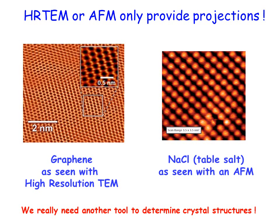We can also observe atomic resolution for graphene using high-resolution transmission electron microscopy, and for sodium chloride salt using atomic force microscopy. In each case we have a 2D projection. For graphene, which is itself a two-dimensional system, we can get the full crystalline structure from such an image. However, for three-dimensional crystals like sodium chloride, we cannot determine the full structure from a single projection. We therefore need another tool to determine crystal structure, which is why in the following lectures we will turn to diffraction.